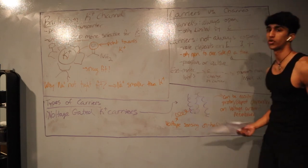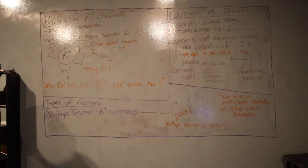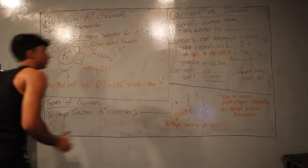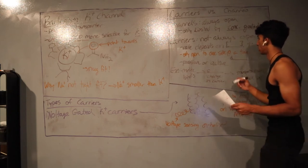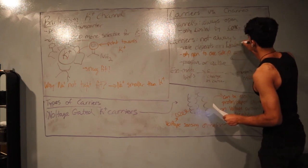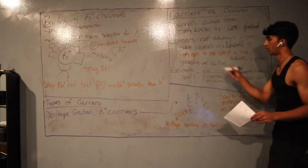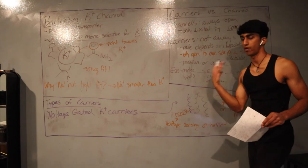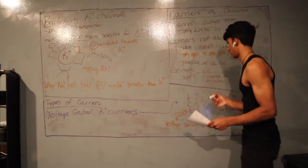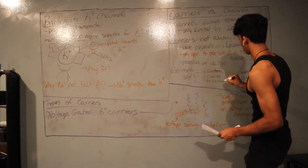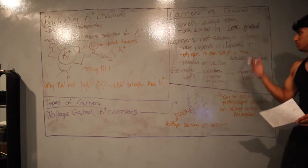Channels versus carriers: channels are always open and are only limited by the concentration gradient. Carriers are not always open; their rate depends on both the concentration gradient and the number of available carriers. Carriers are also only open to one side of the membrane at a time. A molecule binds to the carrier, triggers a conformational change, and the carrier transports the molecule into the cell.